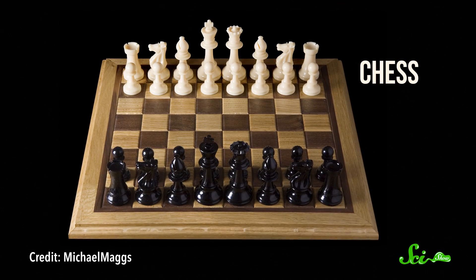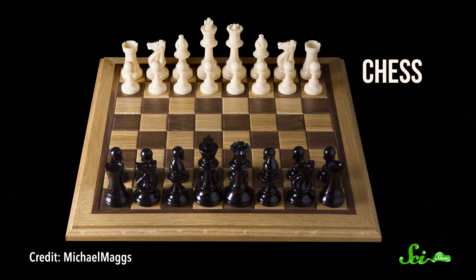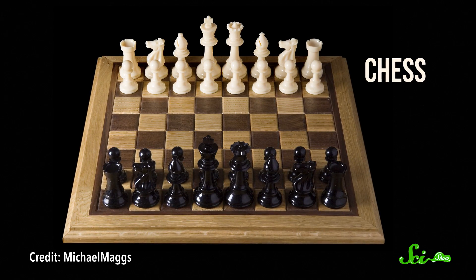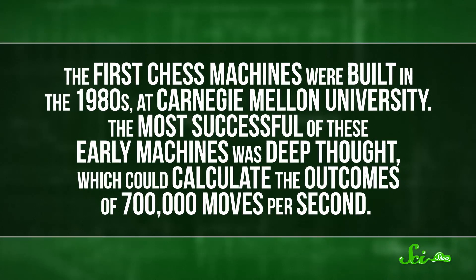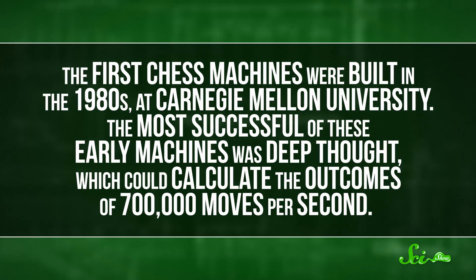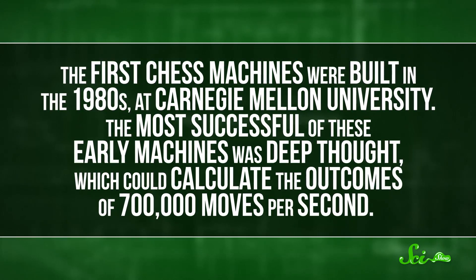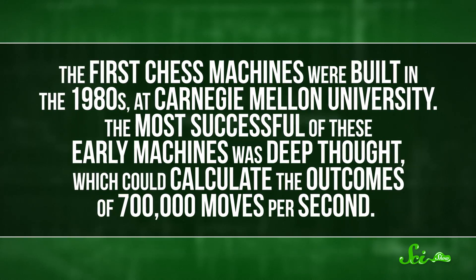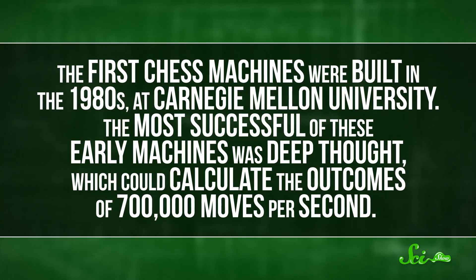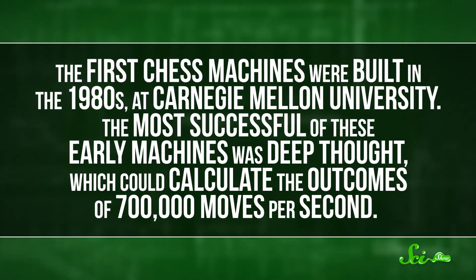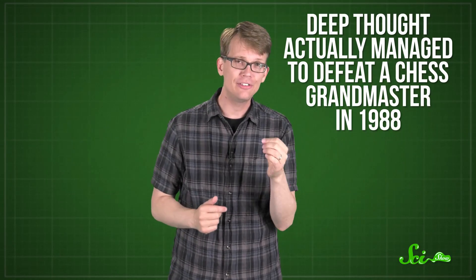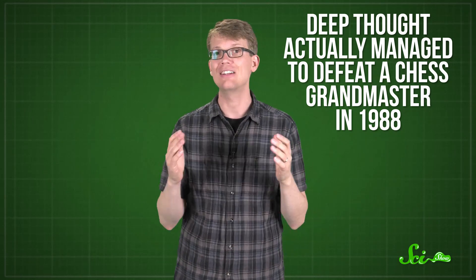Chess is not a basic board game, though. It's a grown-up board game, and winning it was going to take some grown-up technology. The first chess machines were built in the 1980s at Carnegie Mellon University. The most successful of these early machines was Deep Thought, which could calculate the outcomes of 700,000 moves per second. And Deep Thought actually managed to defeat a chess grandmaster in 1988.